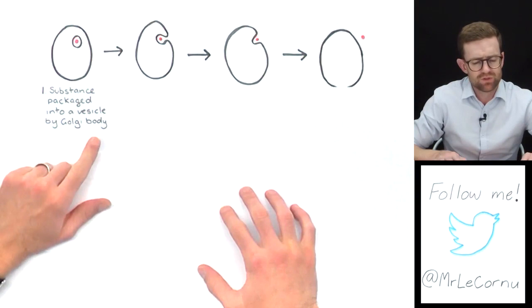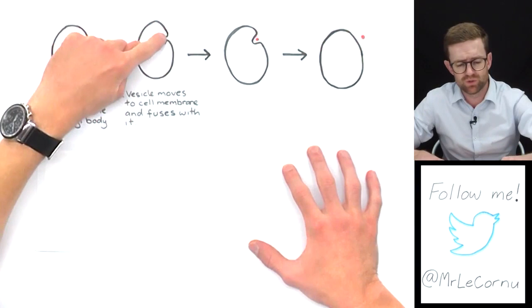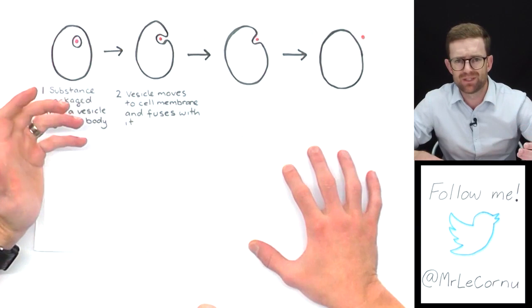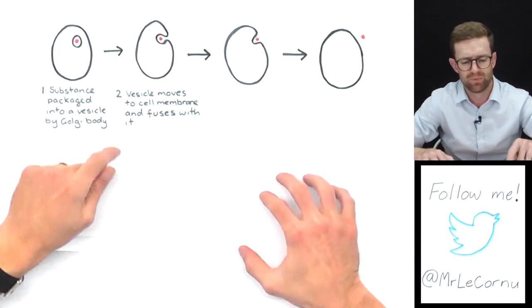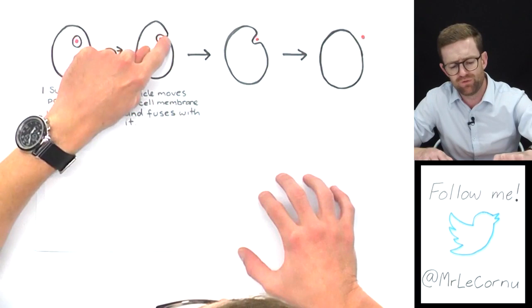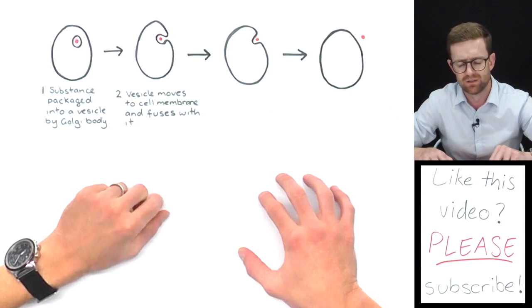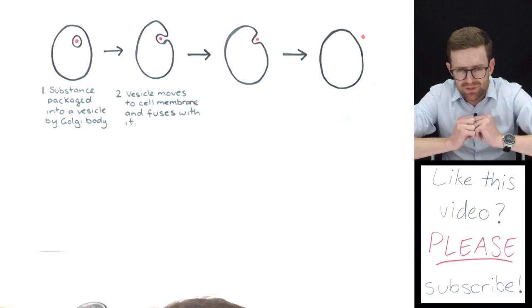Then that vesicle moves to the cell membrane and fuses with the cell membrane. The membrane of the vesicle and the cell membrane are actually made of the same substance—phospholipids and proteins—and so they can join together easily, just like when two bubbles meet together and they spontaneously combine. The vesicle migrates towards the cell membrane, fuses with it, and then you can see we begin to have this little opening here where the substance is going to be released or spewed out of the cell.